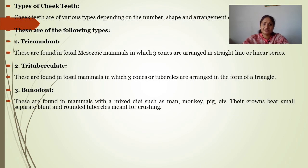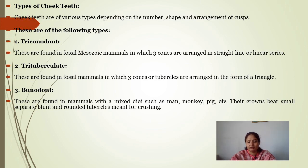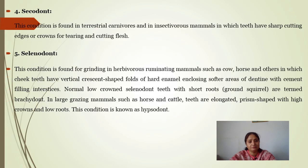There are several types of cheek teeth. Trichodont: three cones in a straight linear series. Tuberculated: three cones with tubercles present. Bunodont: associated with a mixed diet — found in humans, monkeys, and pigs — where the crown bears small, separate, blunt and rounded tubercles meant for crushing.